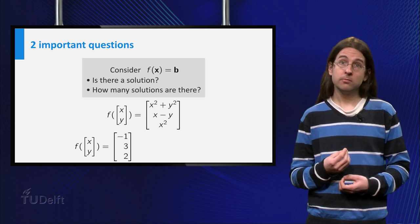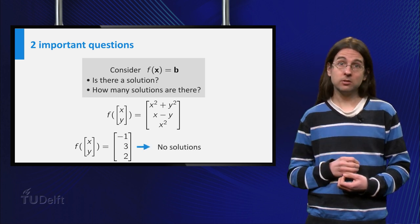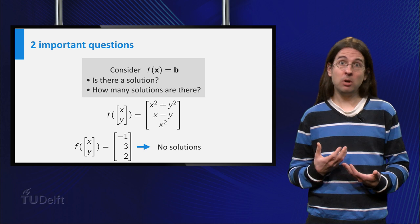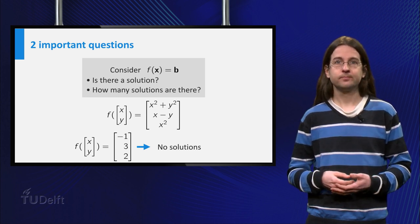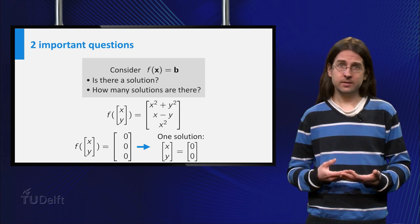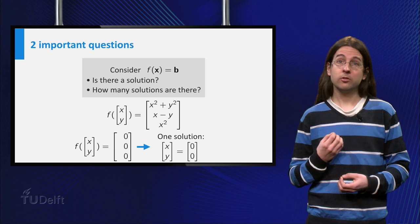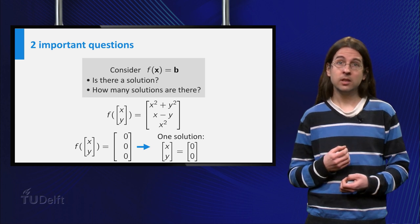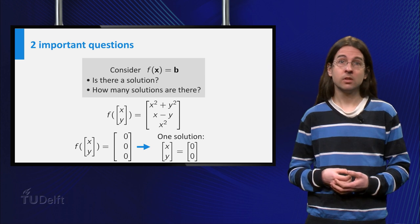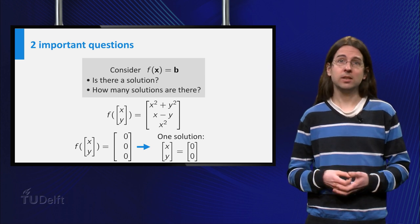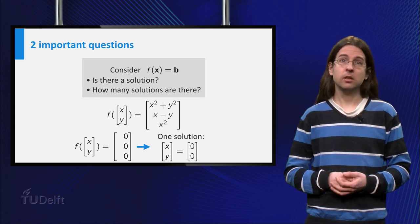For the function from before, we see that there are no solutions, since the first coordinate of the outcome equals x²+y², which is always greater or equal than 0. On the other hand, for the equation f(x,y) = (0,0,0) we see that there is a unique solution (0,0), since x²+y² is only equal to 0 if both x and y are 0.